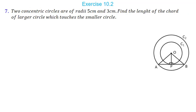Now let us move to the seventh question. Two concentric circles of radius 5 cm and 3 cm are given. Find the length of the chord of the larger circle which touches the smaller circle. We have two circles with the same center O. The radius of the smaller circle OP is 3 cm and the radius of the larger circle OA is 5 cm. We have to find the length of chord AB.